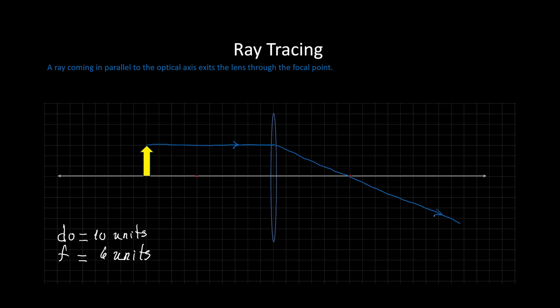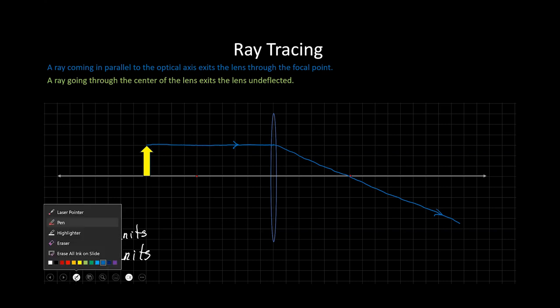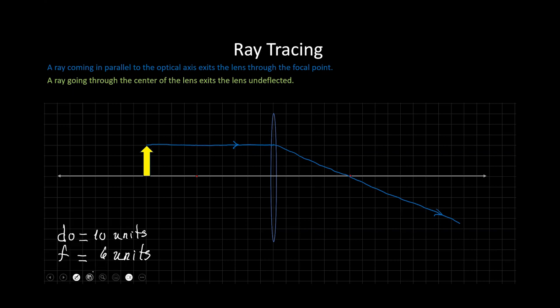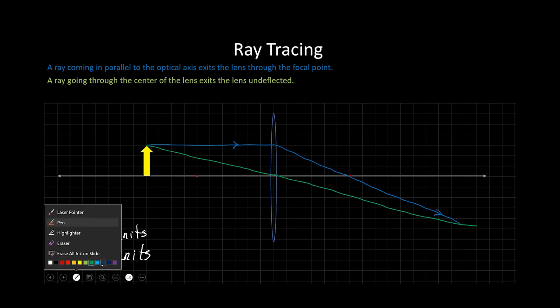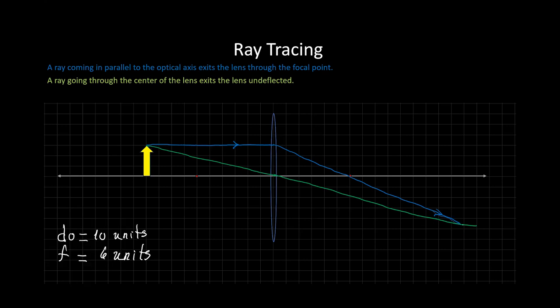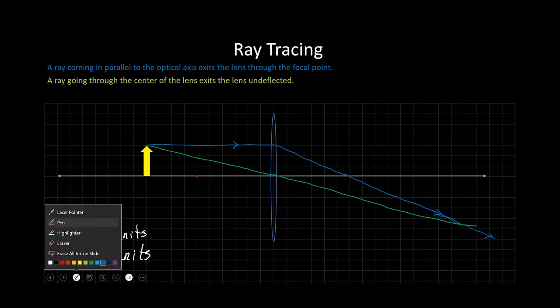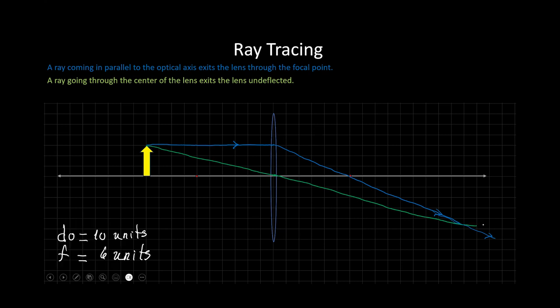Again, three principal rays. The second one in green, it says the ray going through the center of the lens continues. So it doesn't bend, it doesn't do anything. Here's the center of the lens. So a ray going from the tip through the center will continue. Usually you use a ruler. You can draw these out. So this one goes like this.